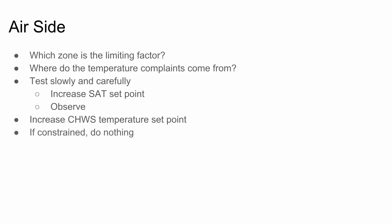So at this point we're going to take one of two directions. If it's constrained, if there's a zone that prohibits us from increasing the chilled water supply temperature set point, then there's nothing we can do. We have to stop right then and there. Otherwise we will impact occupant comfort.